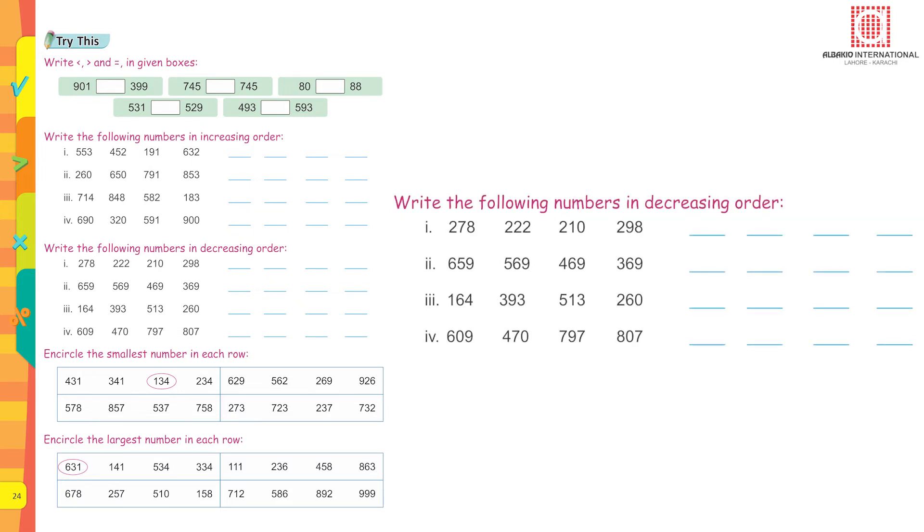Write the following numbers in decreasing order: 278, 222, 210, and 298. In decreasing order, you have to write the greatest number first. So 298 is the greatest, then comes 278, then 222, and at the end 210. This is how you are going to do part 2, 3, and 4.